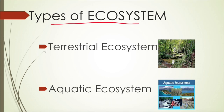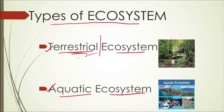If we talk about the types of ecosystem, it can be divided broadly into two parts. One is the terrestrial ecosystem and the second is the aquatic ecosystem. Terrestrial means land, so we talk about the ecosystem on land. Aquatic means water, so we talk about the ecosystem in water.